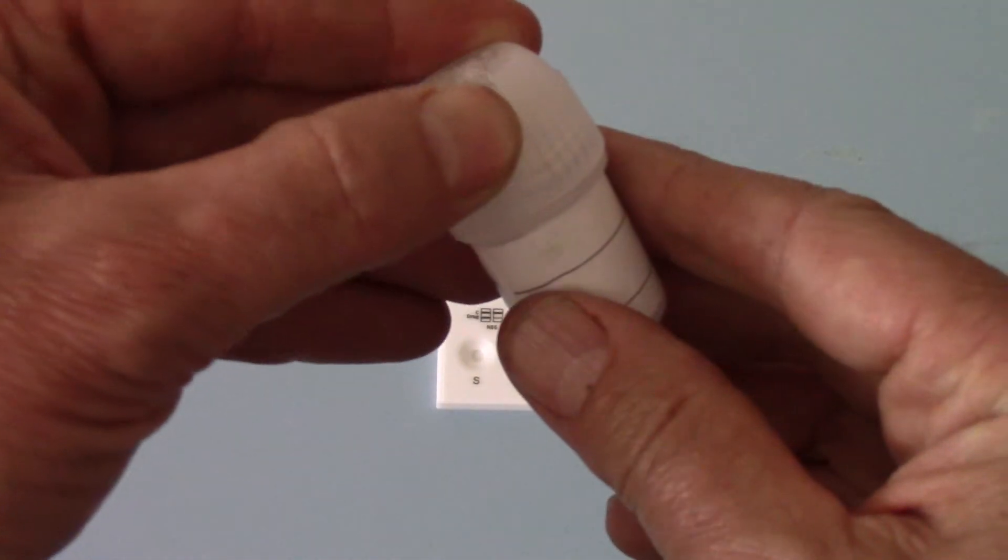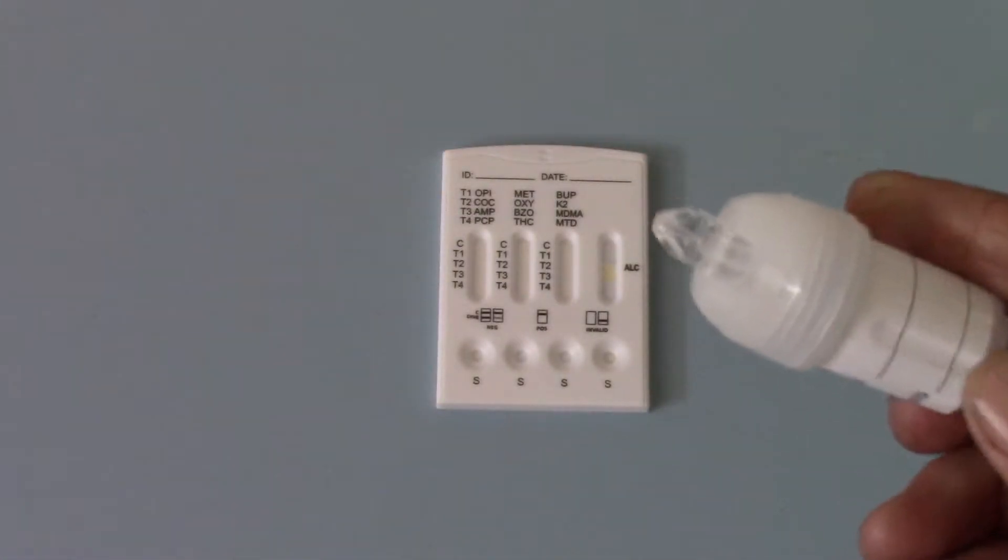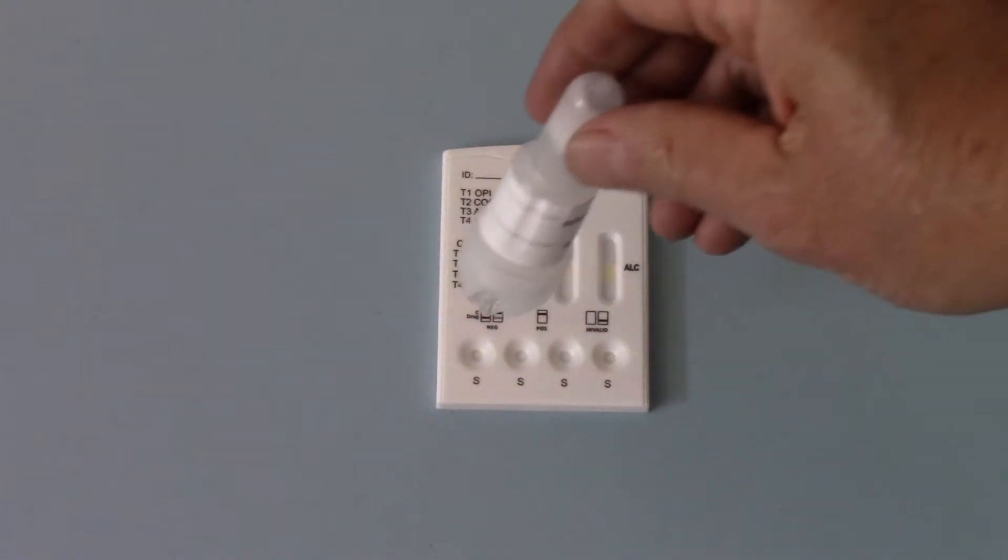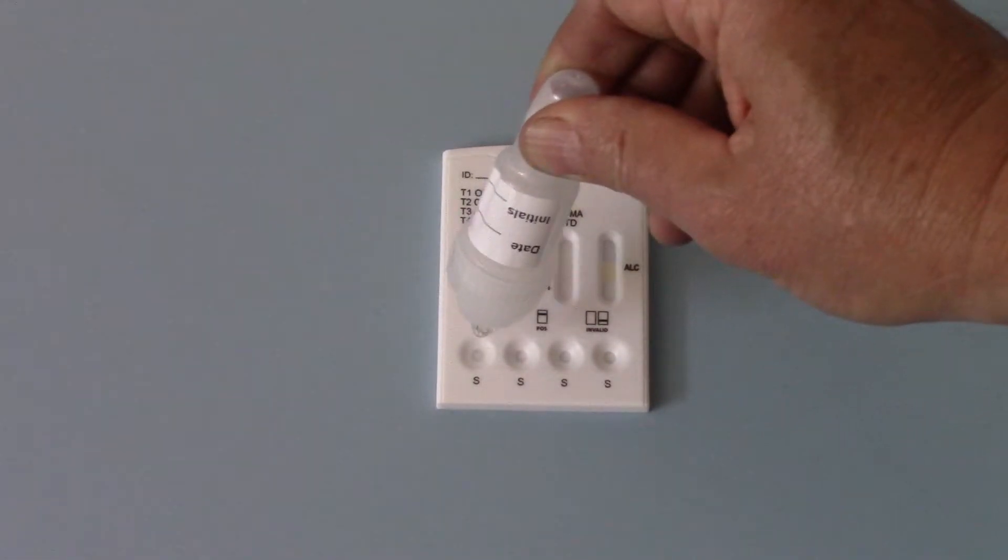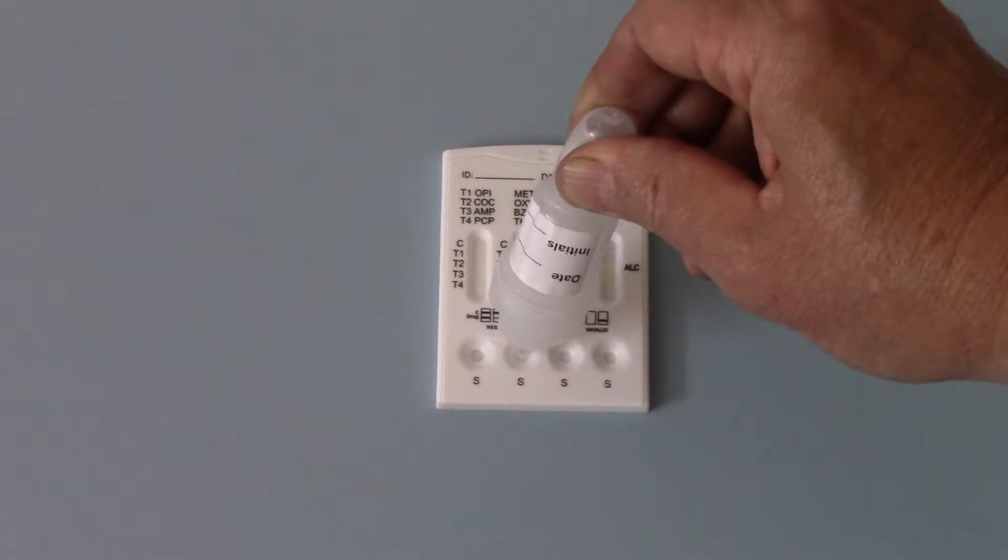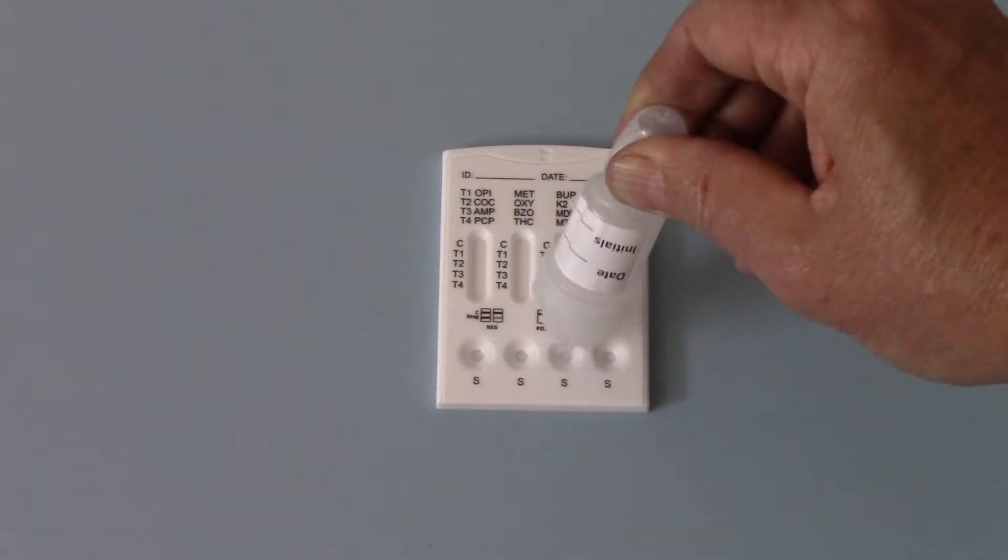I've come round the other side now. We invert the dispenser and then what I'm doing is just squeezing this and adding two to three drops of saliva into each of these sample wells.